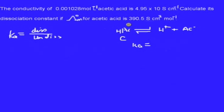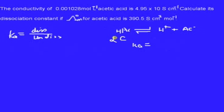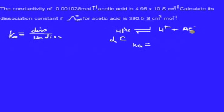Some percent of this acetic acid has dissociated into H⁺ and acetate ion. Just for example, to make things simpler, we are taking alpha as 10%, although we don't know what the percent is right now. So if we take alpha as 10%, we can say that 10% of this concentration has dissociated into H⁺ and acetate ion.